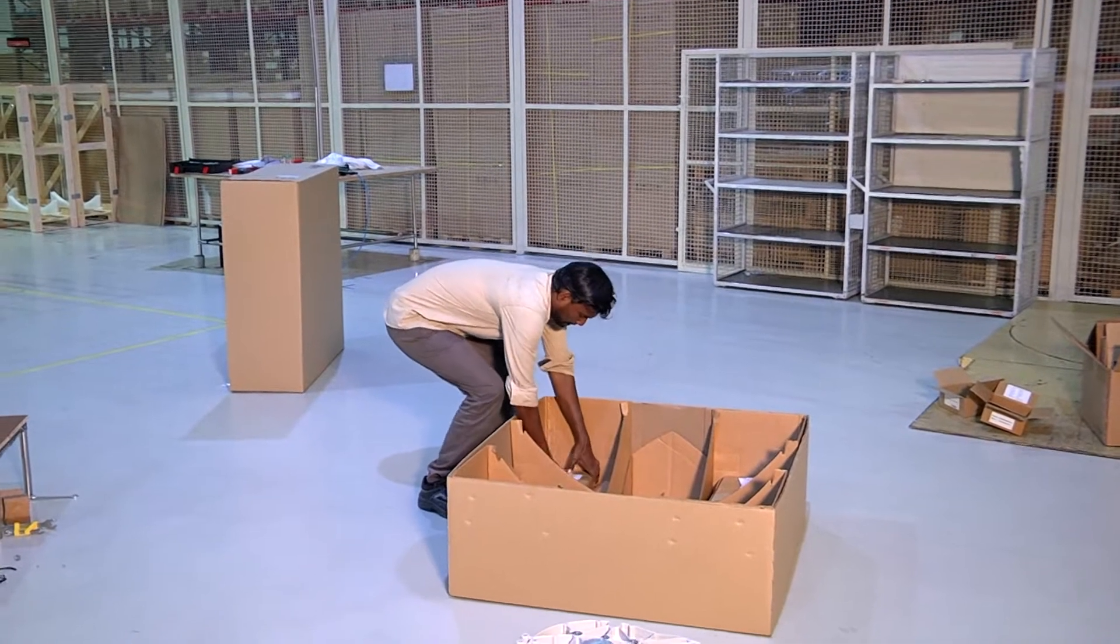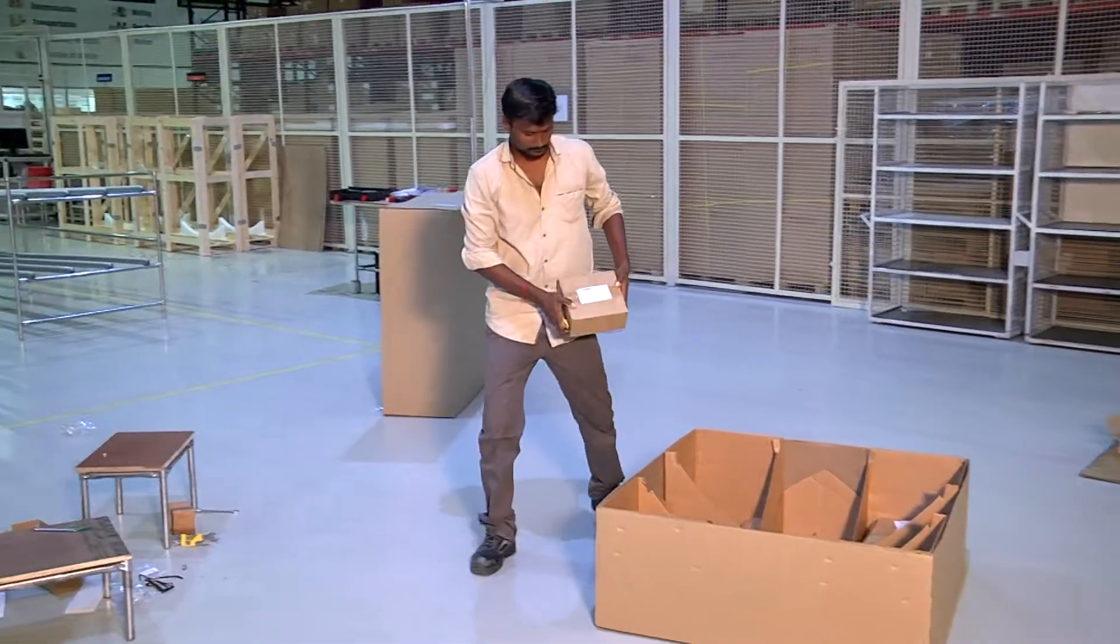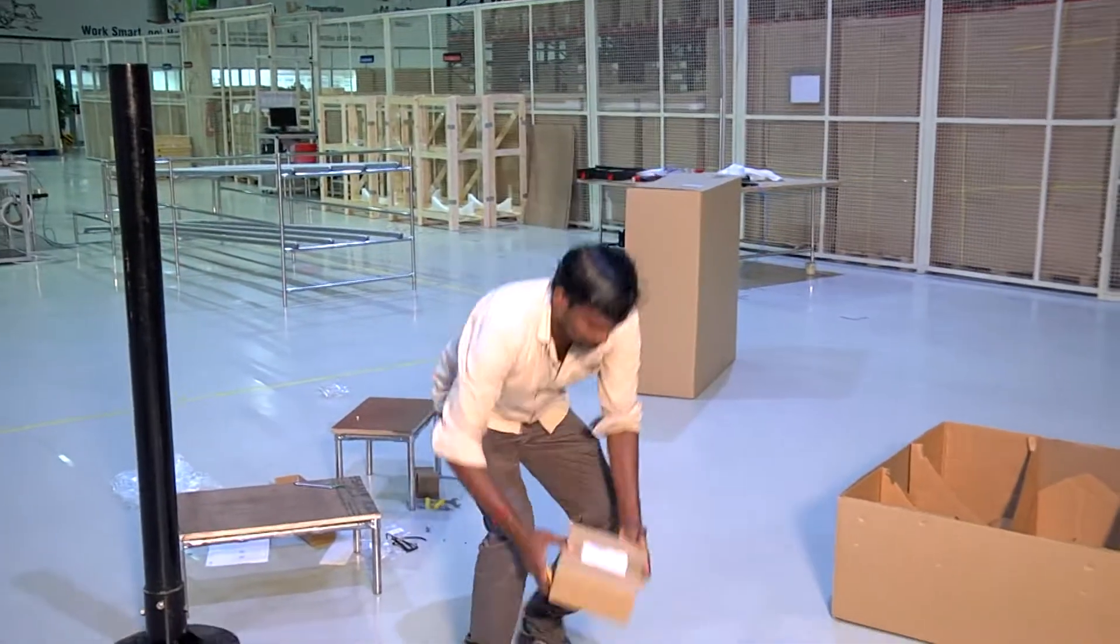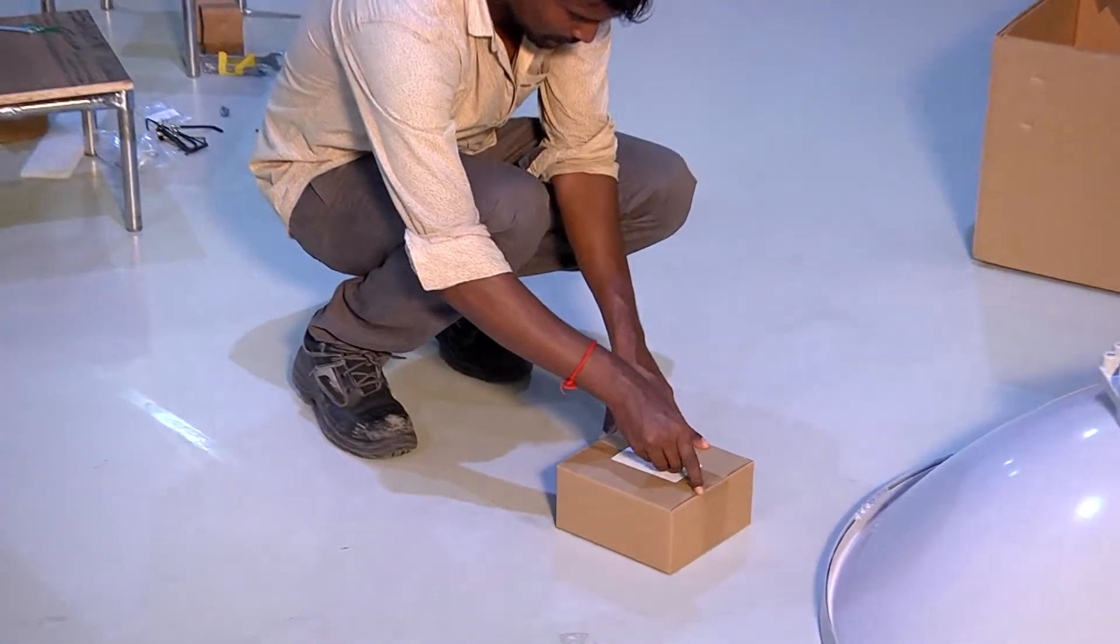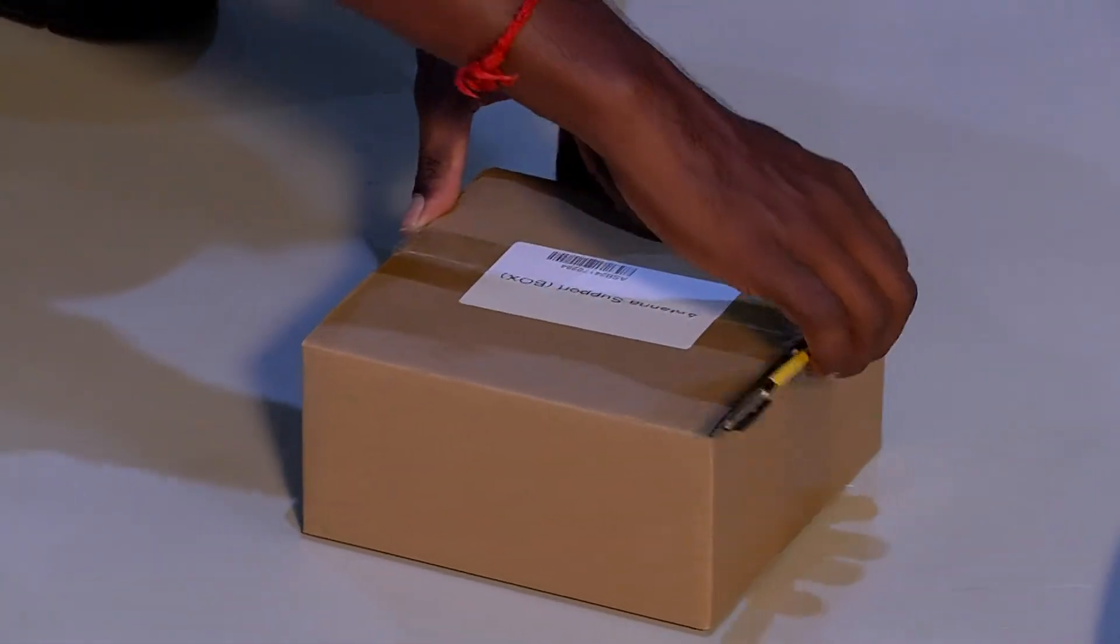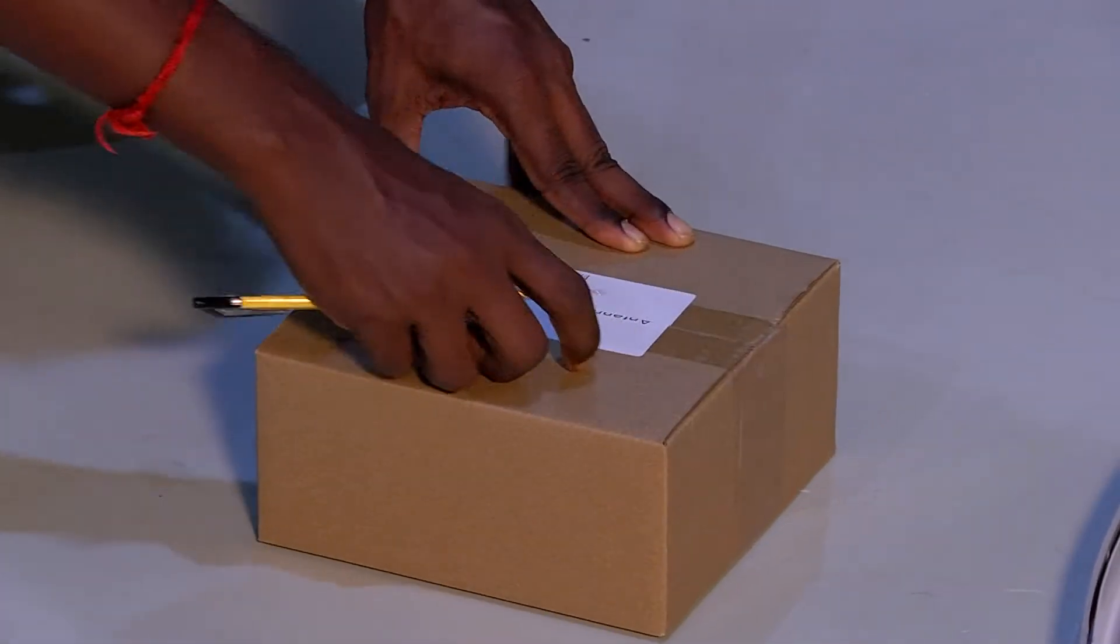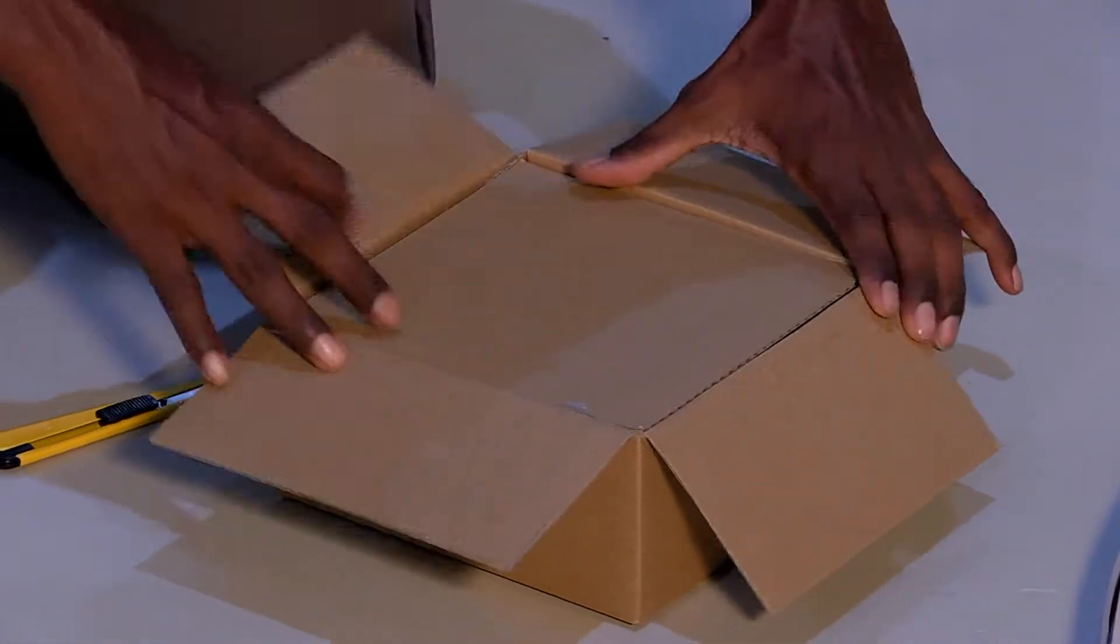The antenna support box and the OMT unit must be taken out of the packing and placed close to the antenna. The antenna support box consists of clamps, nuts, bolts, and other important components which are used to mount the antenna.